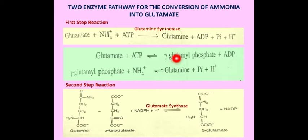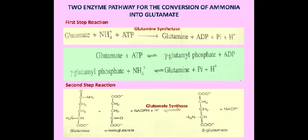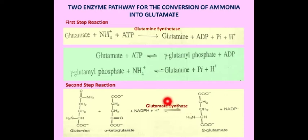This is a central reaction in amino acid metabolism. It is a main pathway for converting toxic free ammonia into non-toxic glutamine for transport in the blood. In the second step, glutamine donates its amino group to alpha-ketoglutarate. As a result, alpha-ketoglutarate is converted into glutamate, catalyzed by the enzyme glutamate synthase. When ammonia is limiting, most glutamate is formed by these two enzymes.